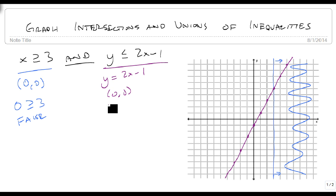When we plug in (0,0), we get 0 is less than or equal to 2 times 0 minus 1. Evaluating that shows us that this is false. So it also wants to shade in this direction, and would shade all of this region.